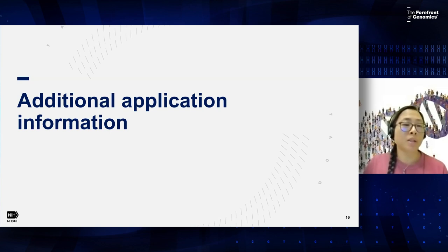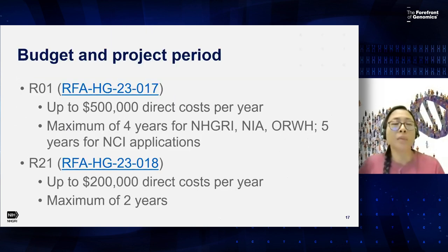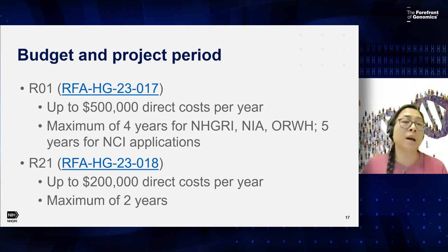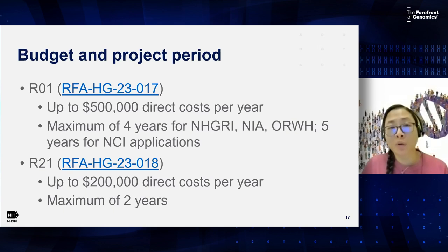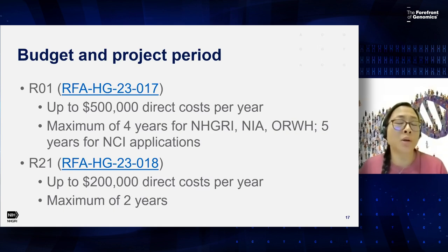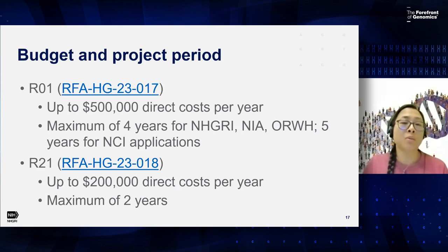I'm going to go into some additional application information — just some practical details as you prepare your applications. If you're planning on submitting an R01 application, please note that there is a limit of up to $500,000 in direct costs per year. For NHGRI, NIA, and ORWH applications, it's a maximum of four years, and then it's a maximum of five years for NCI applications. If you're interested in submitting an R21, your budget limit will be up to $200,000 in direct costs per year for a maximum of a two-year project period.